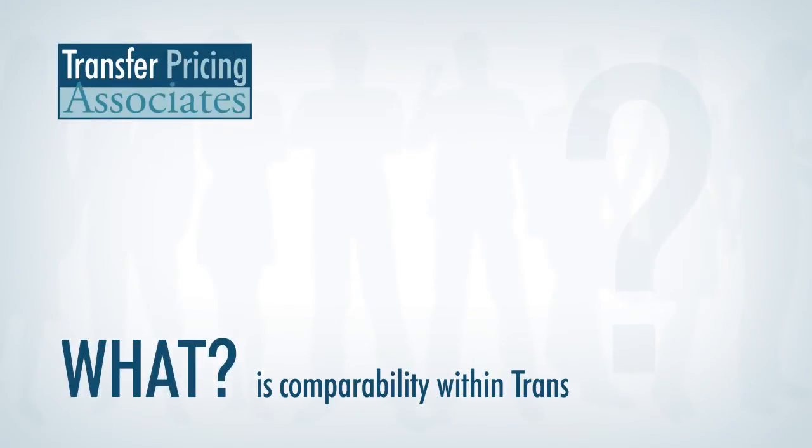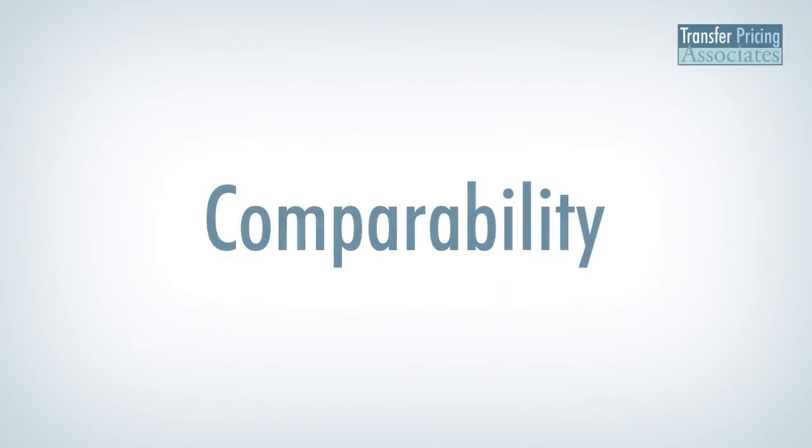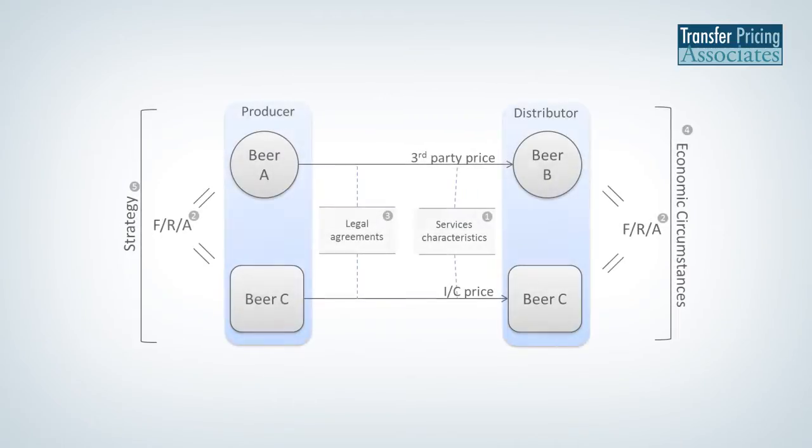What is comparability within transfer pricing? The concept of comparability is central to the arms length principle. When applying the arms length principle, the economically relevant characteristics of the transactions compared need to be sufficiently alike for the analysis to be useful. There are five factors that determine comparability.